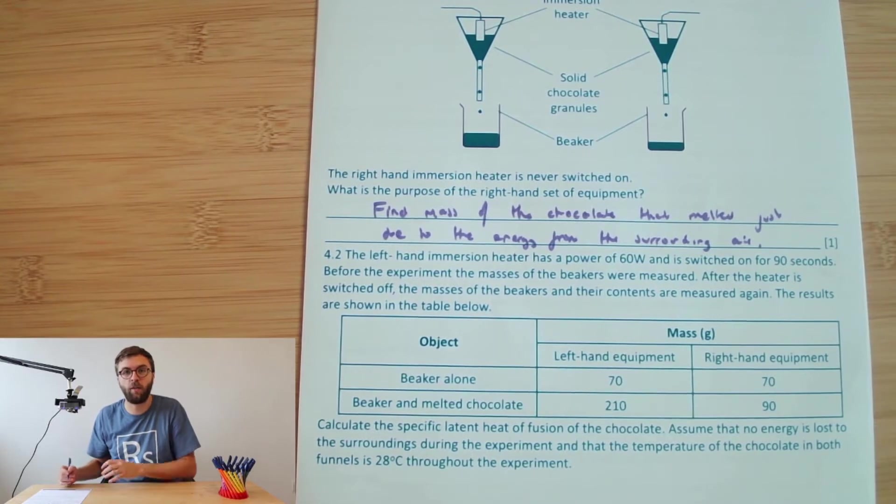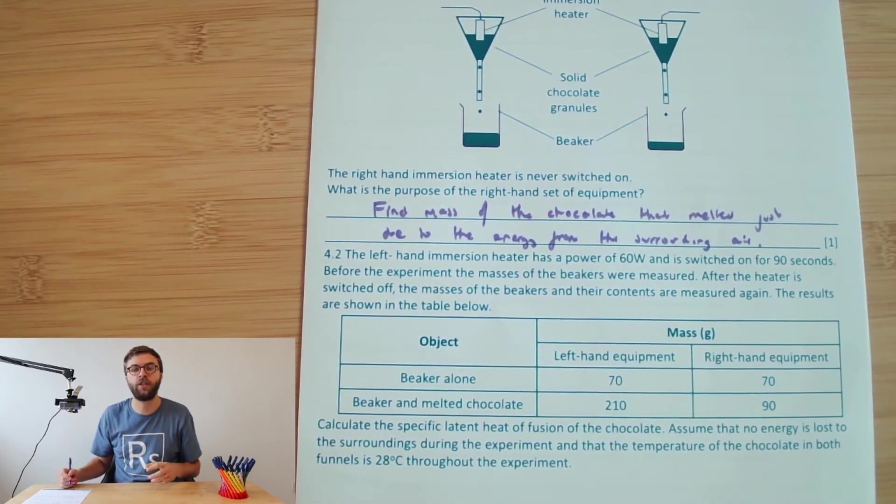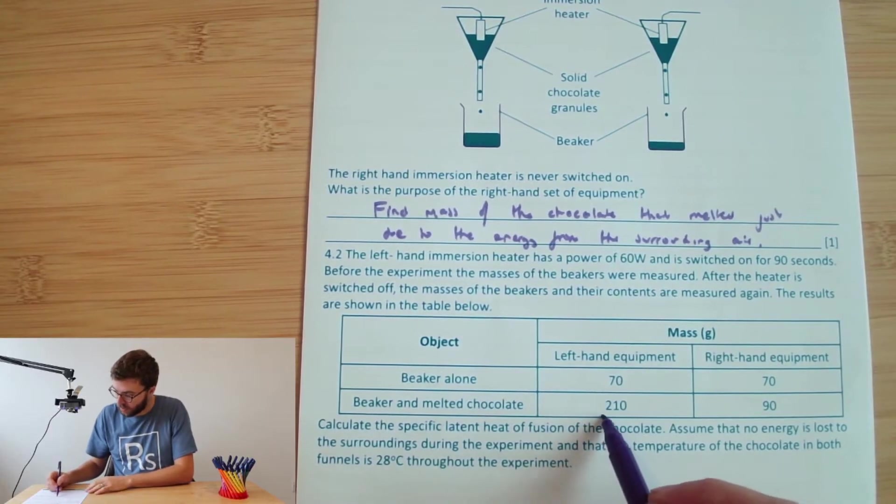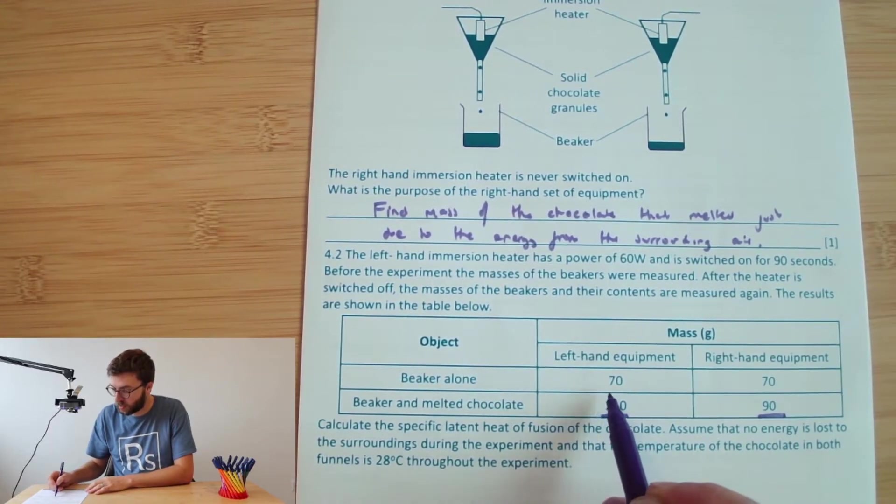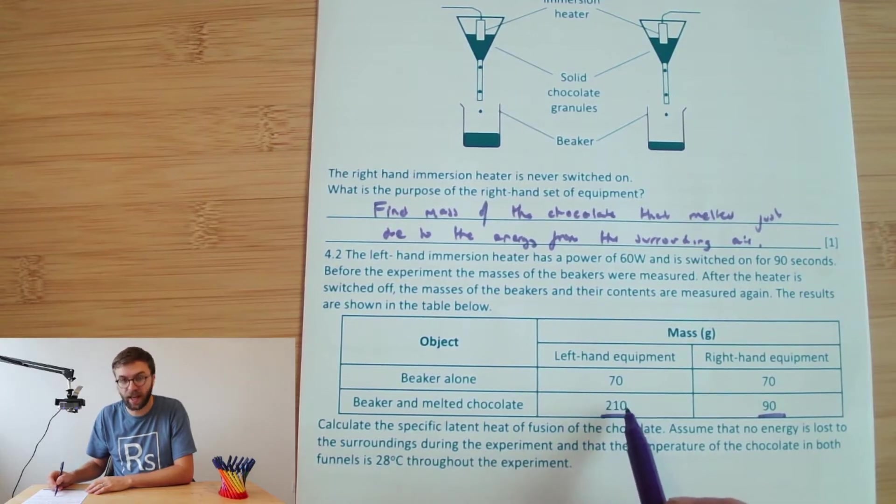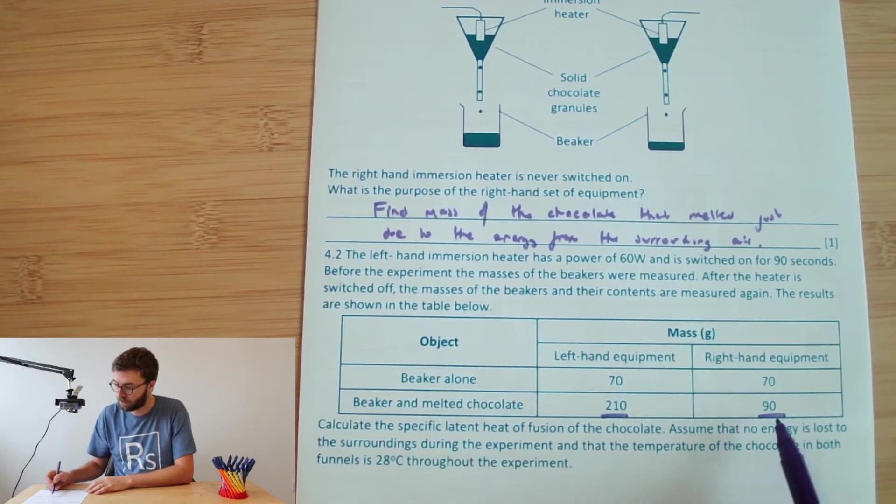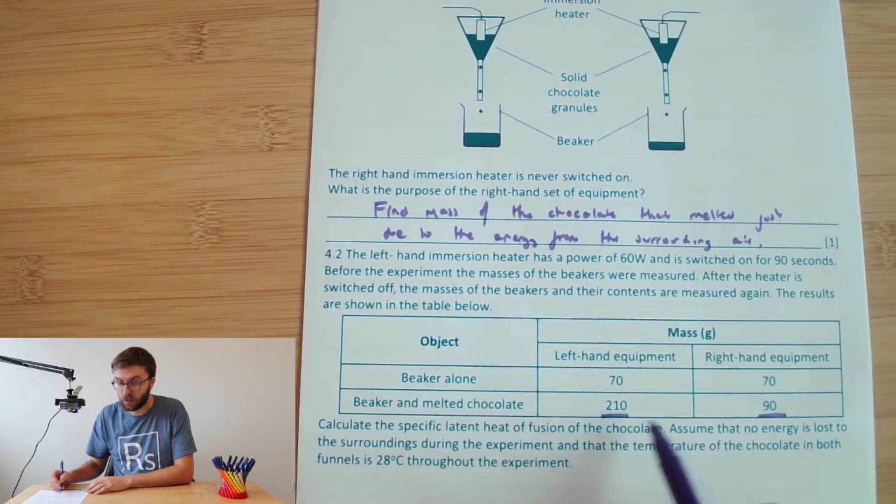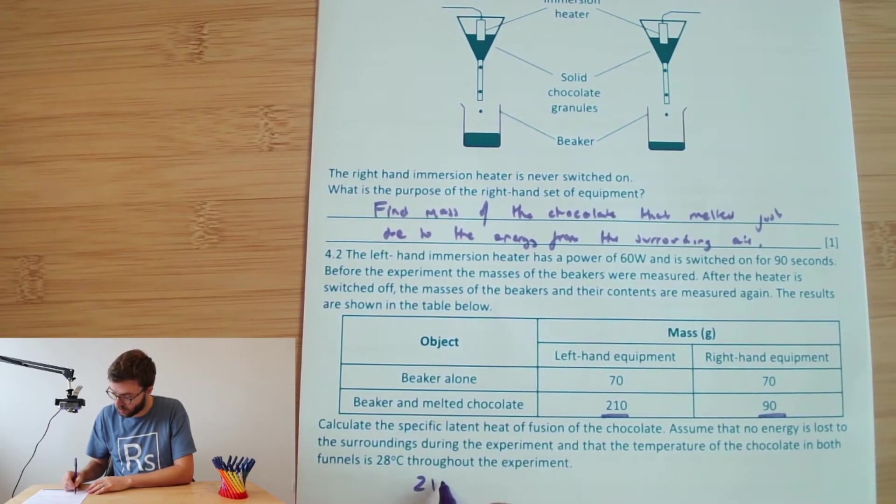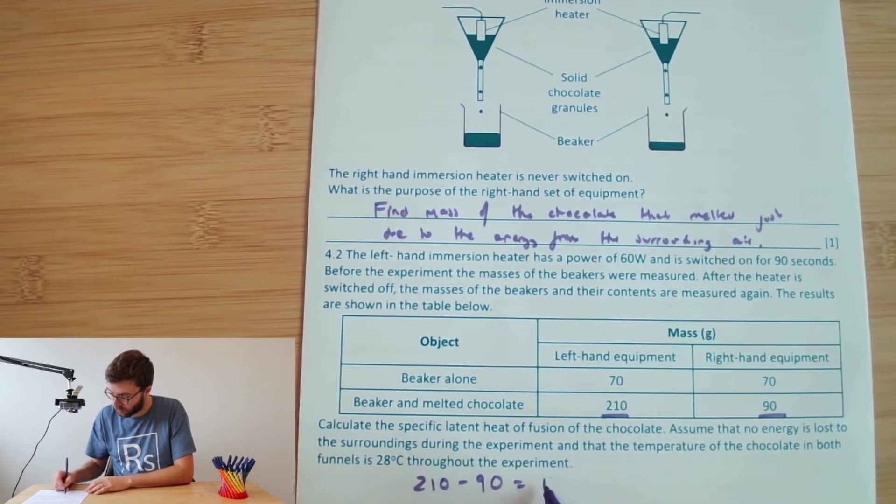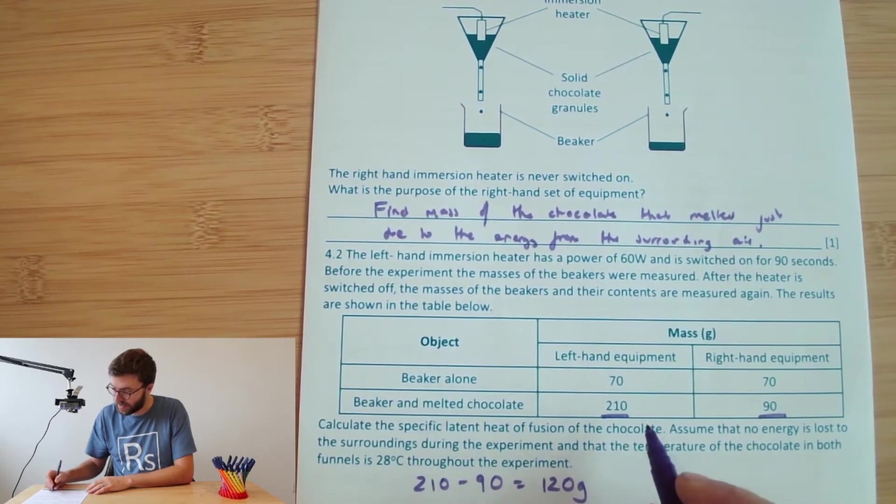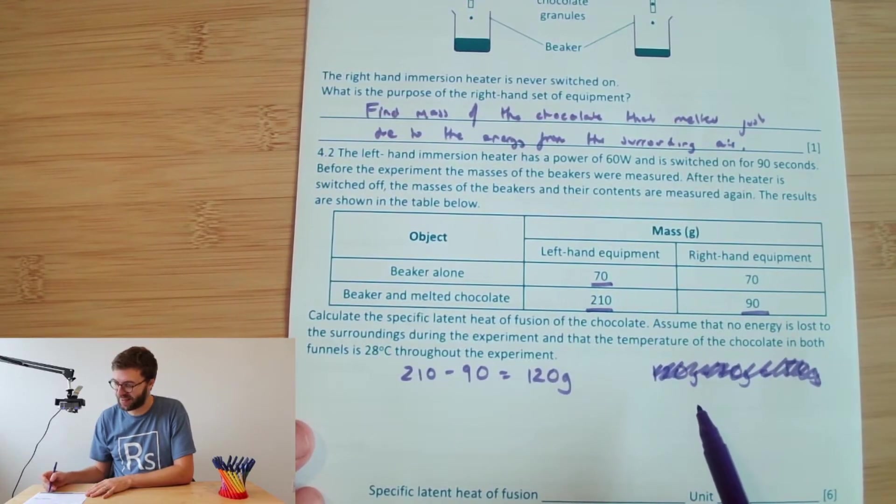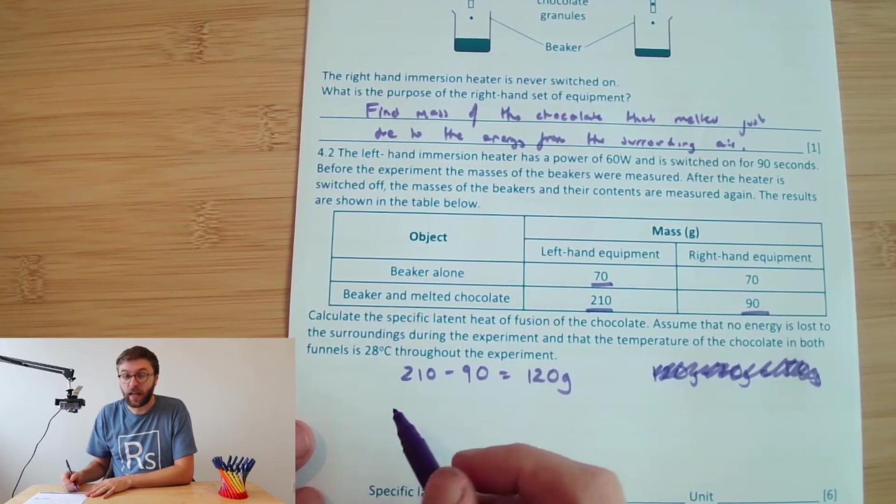So firstly, we need to know how much of the melted chocolate is actually due to the thermal energy coming from the immersion heater. So for that one, we're going to be able to compare these two numbers. So we can see that on the left hand side, 210 grams was melted, whereas on this side, we can see that there was 90 grams. So the difference between those, so 210 minus 90, which gives us 120 grams, is the difference in the melted chocolate.